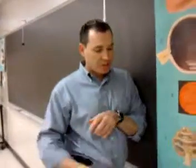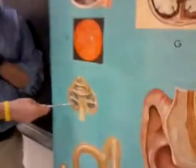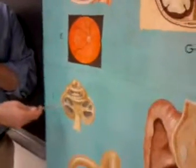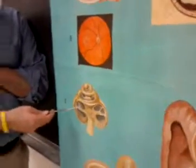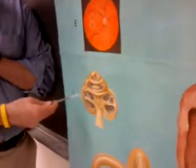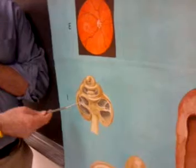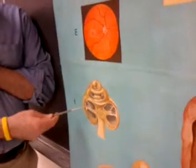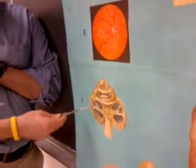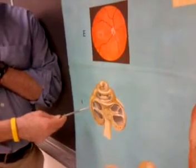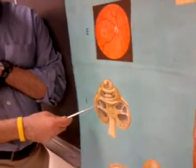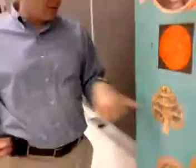Because each one of these turns in the cochlea has these little chambers where the two big outer ones have perilymph, and the inside one has endolymph. This endolymph has something that's kind of a little special on it.